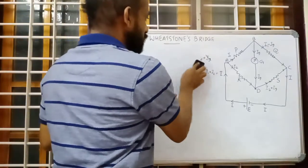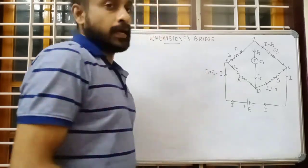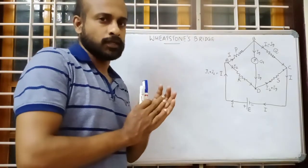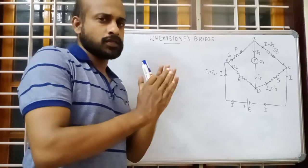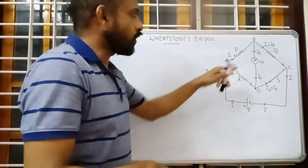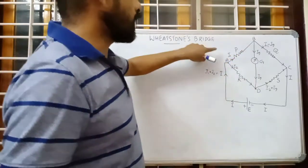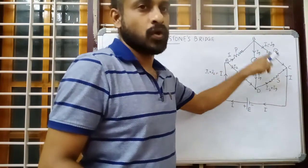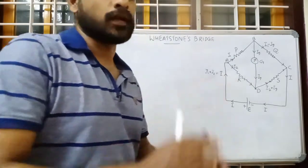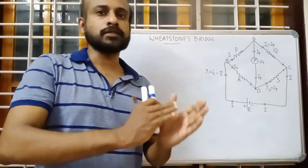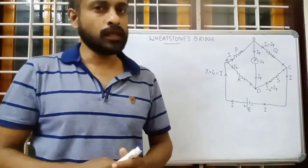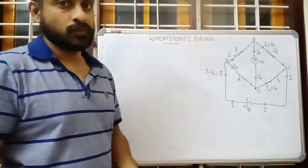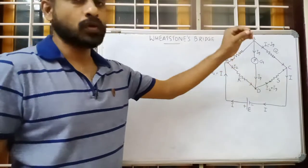There is a special condition for Wheatstone's Bridge. If you select resistors P, Q, R, and S in a particular ratio, no current will flow through the galvanometer. This means the entire current reaching a junction will go to resistance Q, and no current will enter the galvanometer. We need to find this ratio — selecting P, Q, R, and S such that no current flows through the galvanometer. This is called the balancing condition.